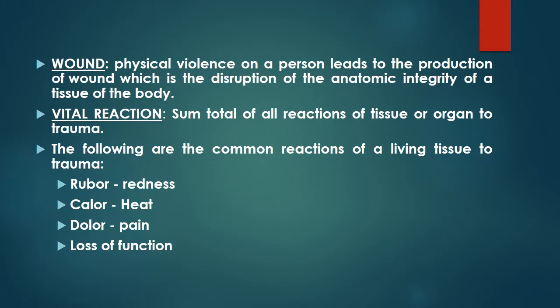Physical violence on a person leads to the production of a wound, which is the disruption of the anatomic integrity of a tissue of the body. Vital reaction is the sum total of all reactions of tissue or organ to trauma. The common reactions of a living tissue to trauma are: rubor, calor, dolor, and loss of function.